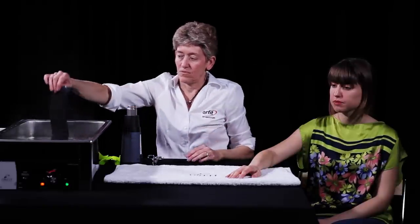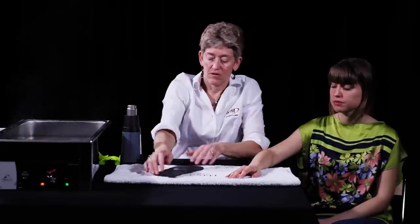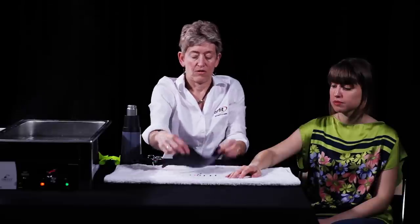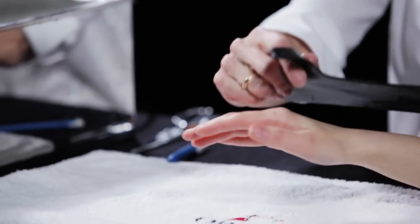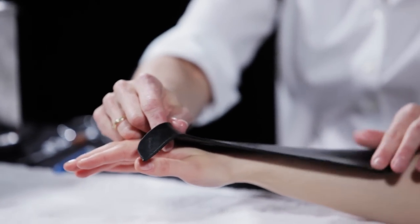Remove the orthosis from the water bath and dry briefly to remove the excess hot water. Position the orthosis on the dorsum of the patient's hand from the MCP joints to the forearm.